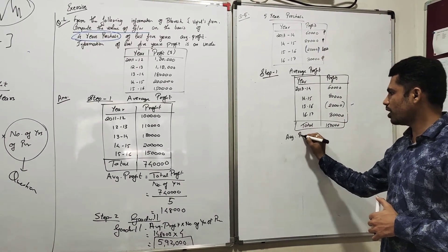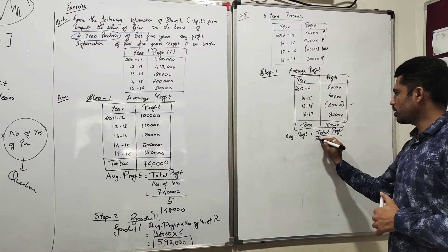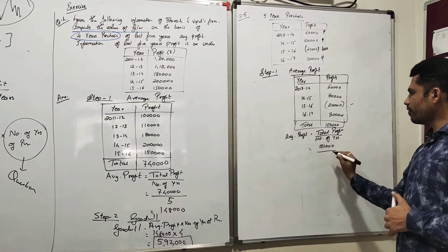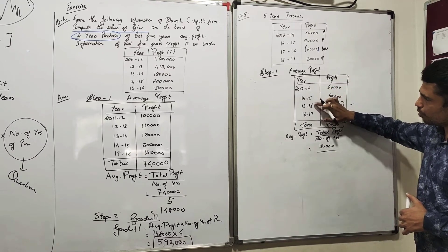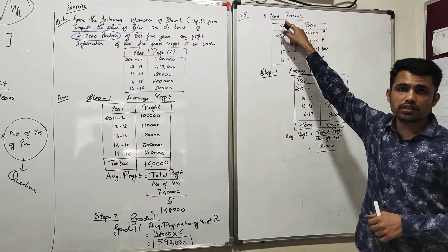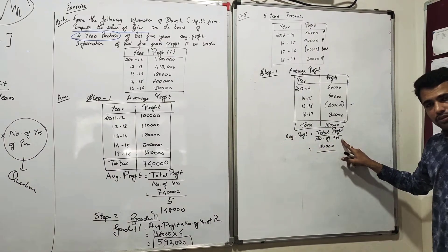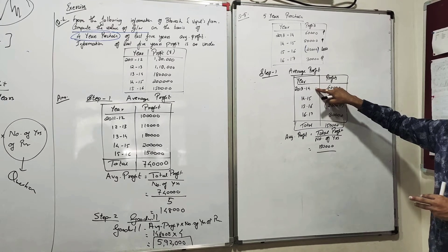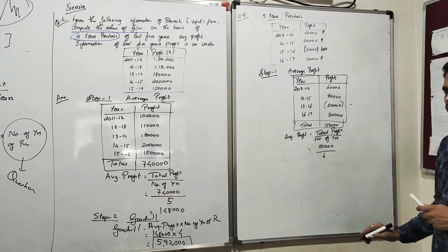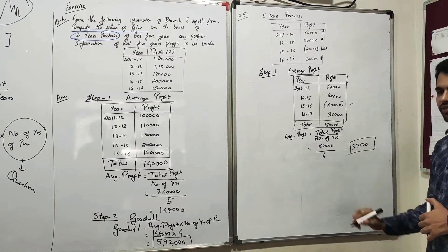The formula for average profit is Total Profit divided by Number of Years. Total profit is one lakh fifty thousand. The number of years here is four — count the rows in the table: one, two, three, four. Do not use five years purchase here; the years of purchase figure is only used in Step Two. So the average profit is one lakh fifty thousand divided by four, which equals thirty-seven thousand five hundred.